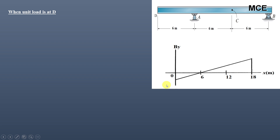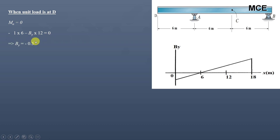When finding the ordinate at D, we place the unit load at D and find the vertical reaction at B by taking the summation of moments about A equals zero. The moment due to the unit force about A is minus 1×6, and the moment of the vertical reaction BY about A is minus BY×12, both anti-clockwise. This gives BY equal to minus 0.5, so the ordinate at D is minus 0.5.